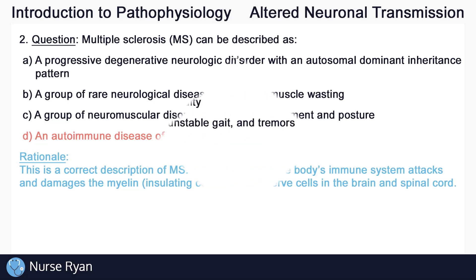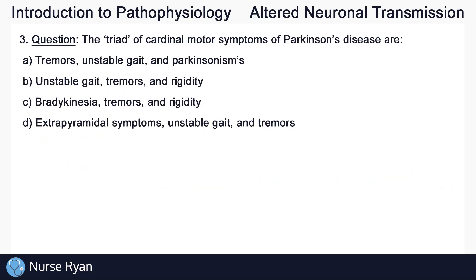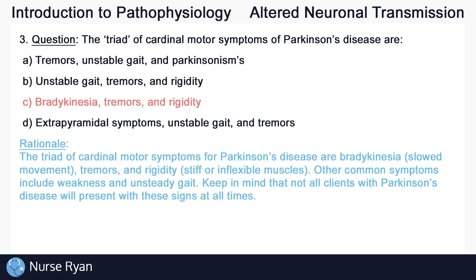Question number three: the triad of cardinal motor symptoms of Parkinson's disease are? The answer here is C — bradykinesia, tremors, and rigidity. Bradykinesia being slowed movement and rigidity relating to stiff or inflexible muscles. Other common symptoms include weakness and unsteady gait.